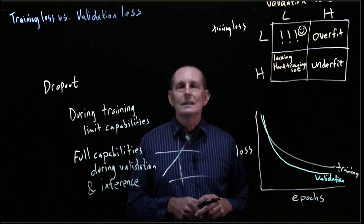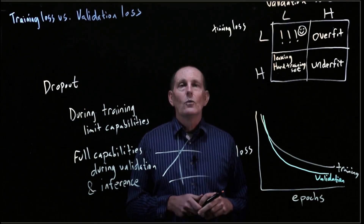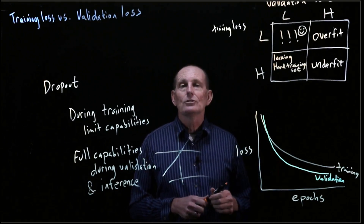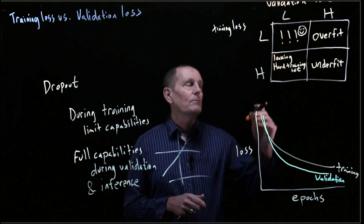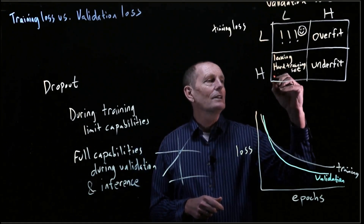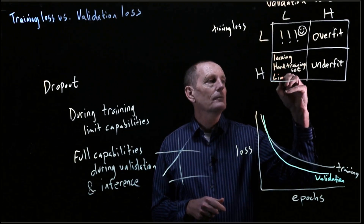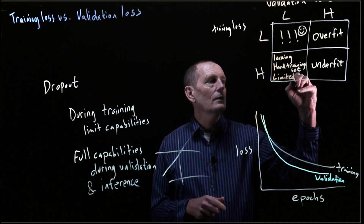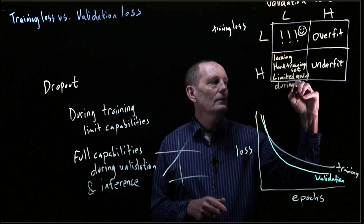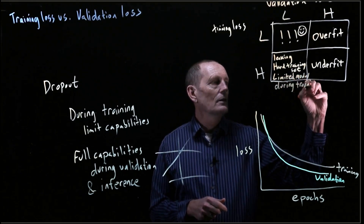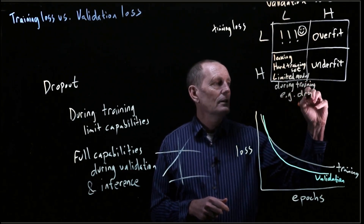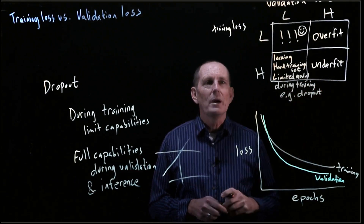So that is a reason why we can get lower validation loss — training is harder for another reason. Here we have a hard training set due to limited model during training, and an example of that is dropout regularization.